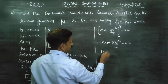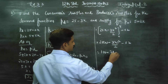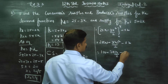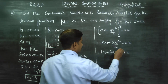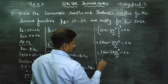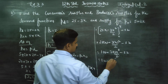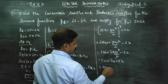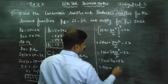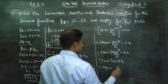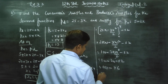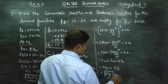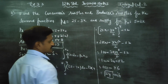Applying the upper limit: 25 into 4 gives 100, minus 3 into 4 squared by 2 equals 3 into 16 by 2, which is 24. So we have 100 minus 24 equals 76, minus 52. Your answer will be 24 units, which is the consumer surplus.